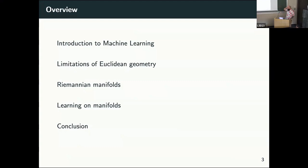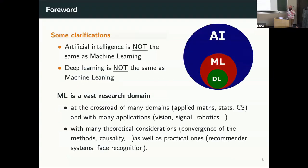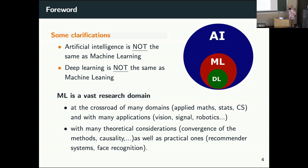And then I will introduce some of my work where we learn on particular spaces. Just a quick clarification, because there is some confusion about the terms. Nowadays, people are talking about AI everywhere. Sometimes people talk about AI when they want to talk about machine learning, or even talk about AI for deep learning. Actually, machine learning is a subfield of AI, and deep learning is a subfield of machine learning.